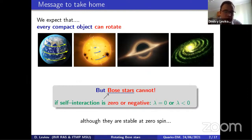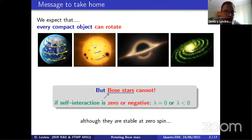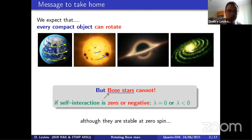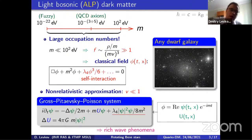We expect that all compact and stable objects in the universe are held together by strong forces, and therefore we can add a little bit of rotation to them. But boson stars are an exception from this rule — they cannot rotate at all. Our no-go theorem about the non-rotating boson stars is valid if the self-interaction of axions making these stars is either absent or negative, as in usual models.